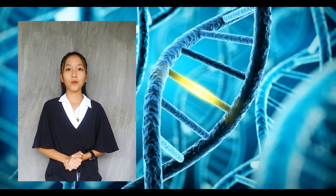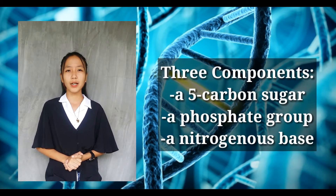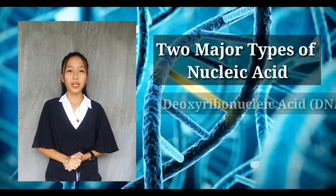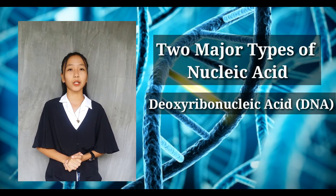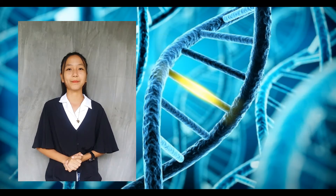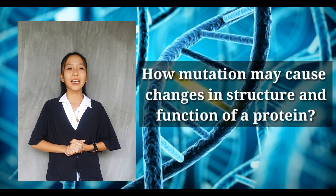Nucleic acids are composed of nucleotides, which are monomers made of three components: a 5-carbon sugar, a phosphate group, and a nitrogenous base. The two major types of nucleic acids are deoxyribonucleic acid or DNA and ribonucleic acid or RNA. Now let us begin the discussion on explaining how mutation may cause changes in the structure and function of a protein.